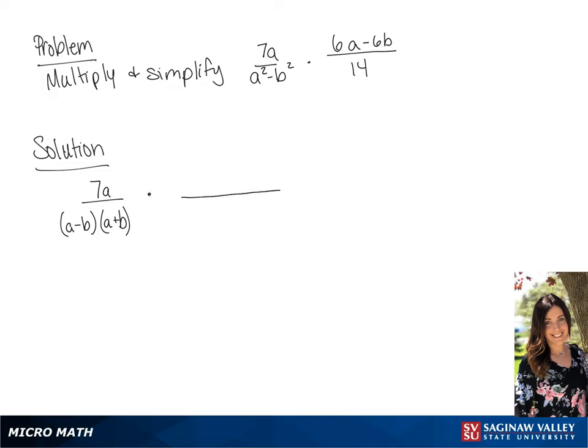Next we're going to factor the numerator of the second fraction, so we have 6 times a minus b.